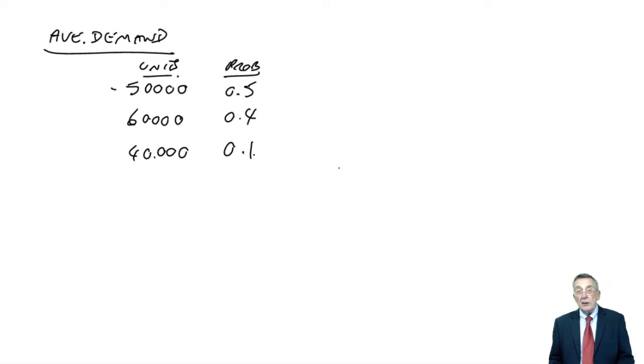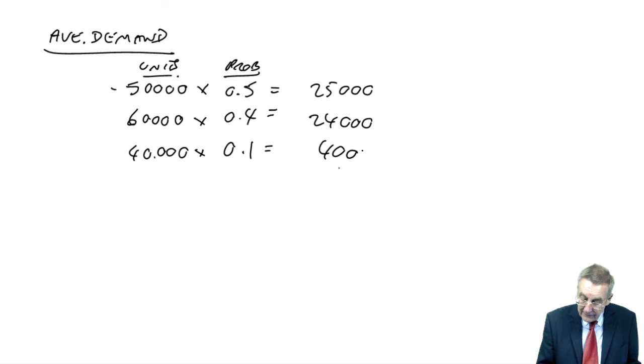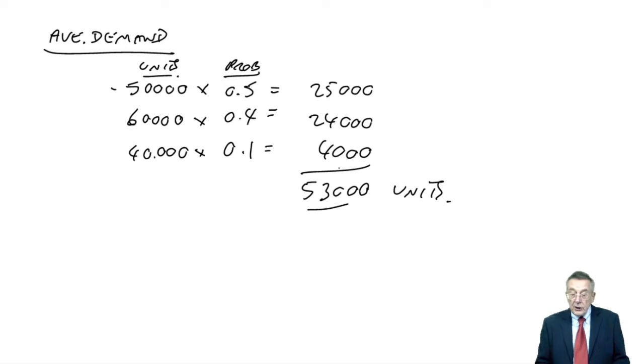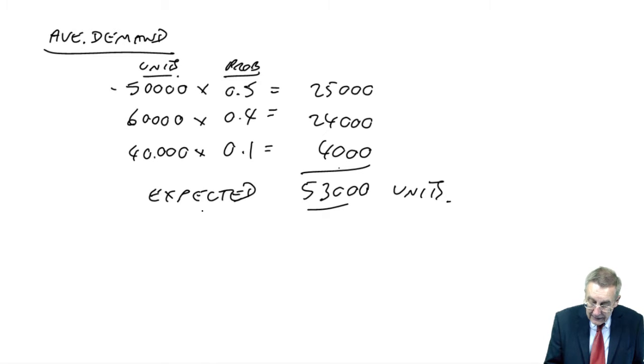So we've identified three possible levels, we know the probabilities. And so the average, the weighted average demand, multiplied by the probabilities, and what do we get? 53,000, I think. That's the weighted average, or the expected value. Expected value of 53,000 units.